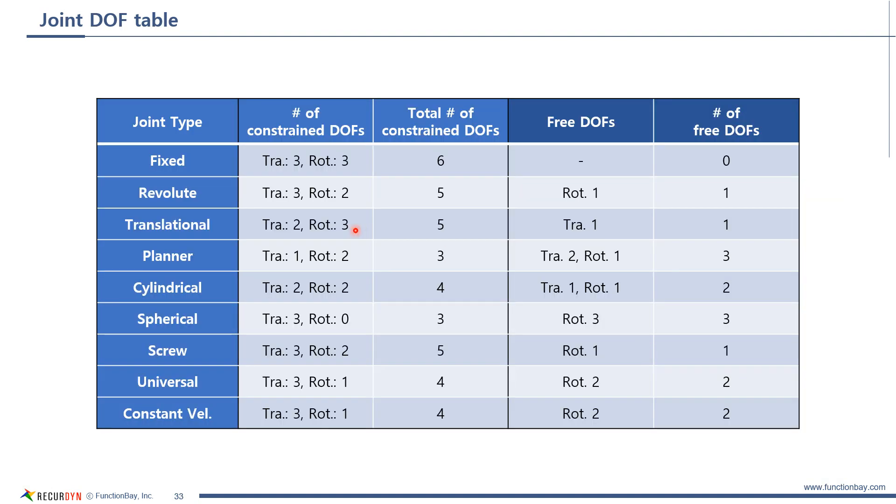This is the table which shows the constrained degrees of freedom and free degrees of freedom. For example, revolute joint constrains 5 degrees of freedom.